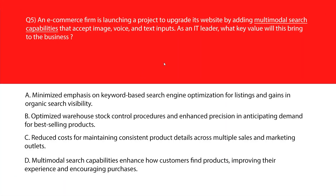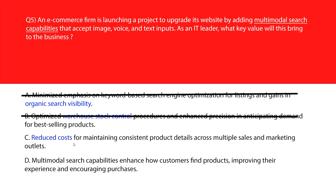This question is all about adding multi-modal search capabilities which accept image, voice, and text inputs. Option A says minimize emphasis on keyword-based search engine optimization for listings to gain organic search visibility — this describes a marketing tactic, not the core customer experience benefit of the new search functionality. Option B says optimize warehouse stock control and enhance precision in anticipating demand — this addresses internal logistics, not the customer-facing goal. Option C says reduce costs for maintaining consistent product details across multiple sales outlets — this focuses on cost efficiency, not enhancing customer experience.